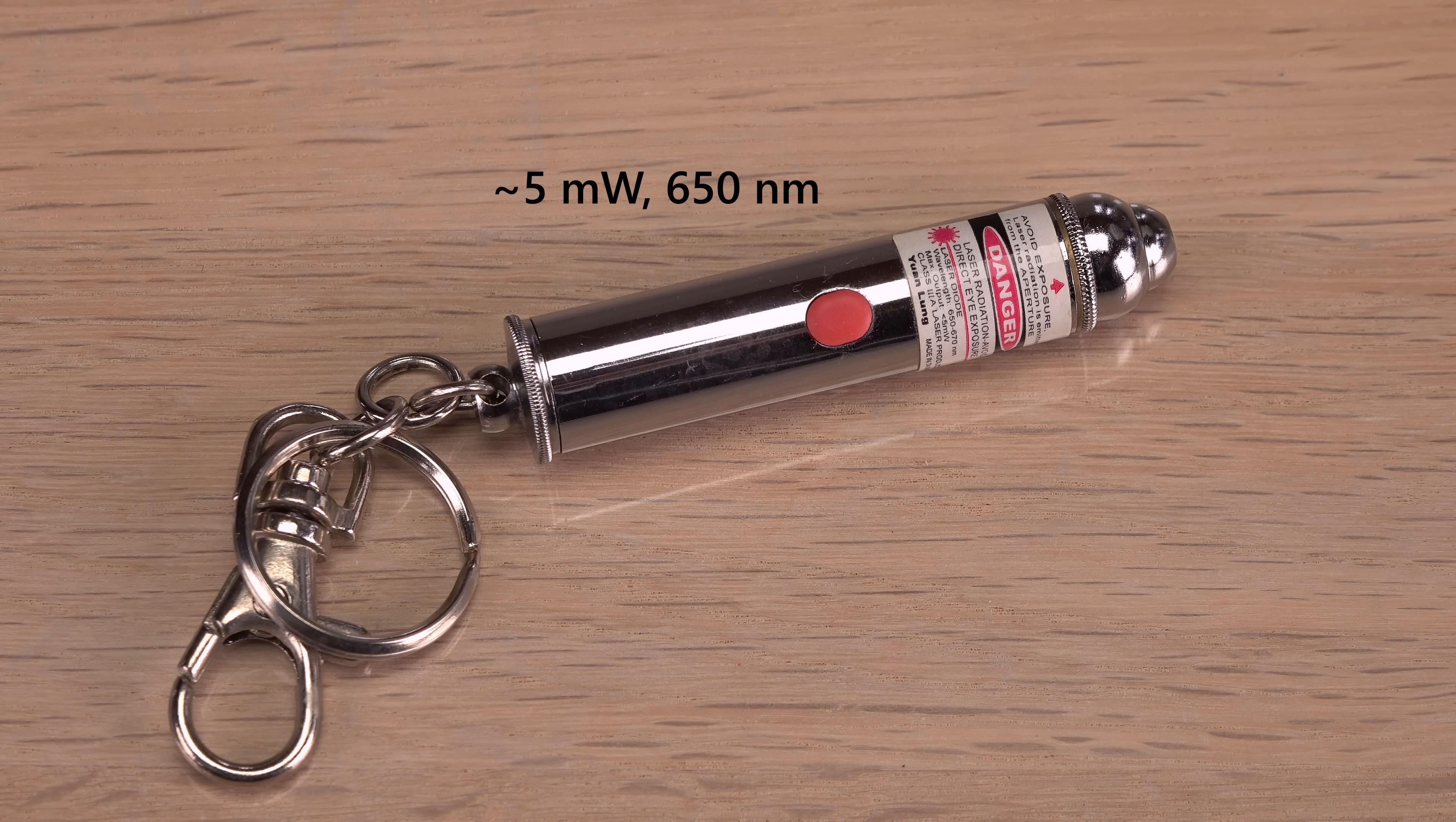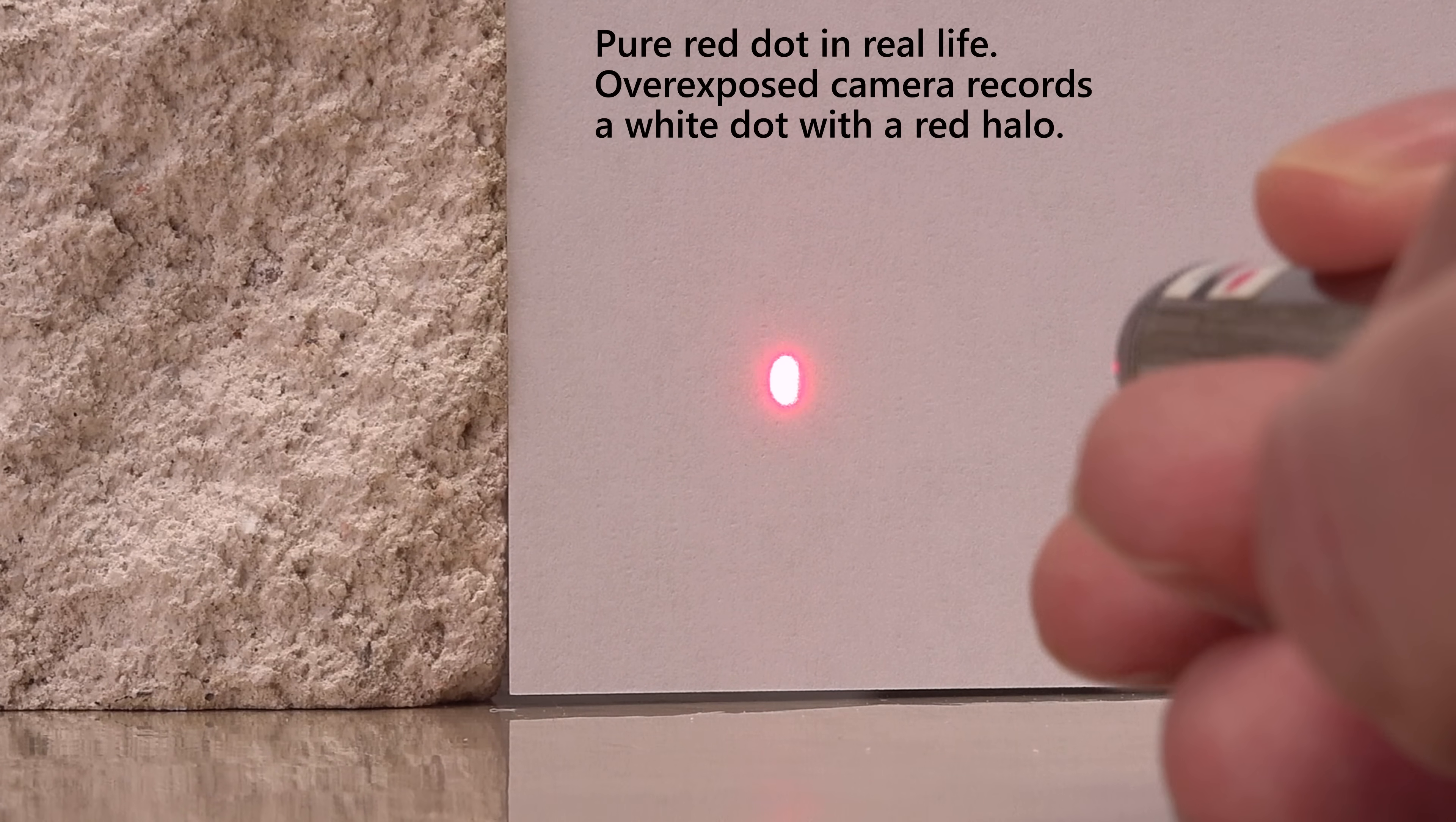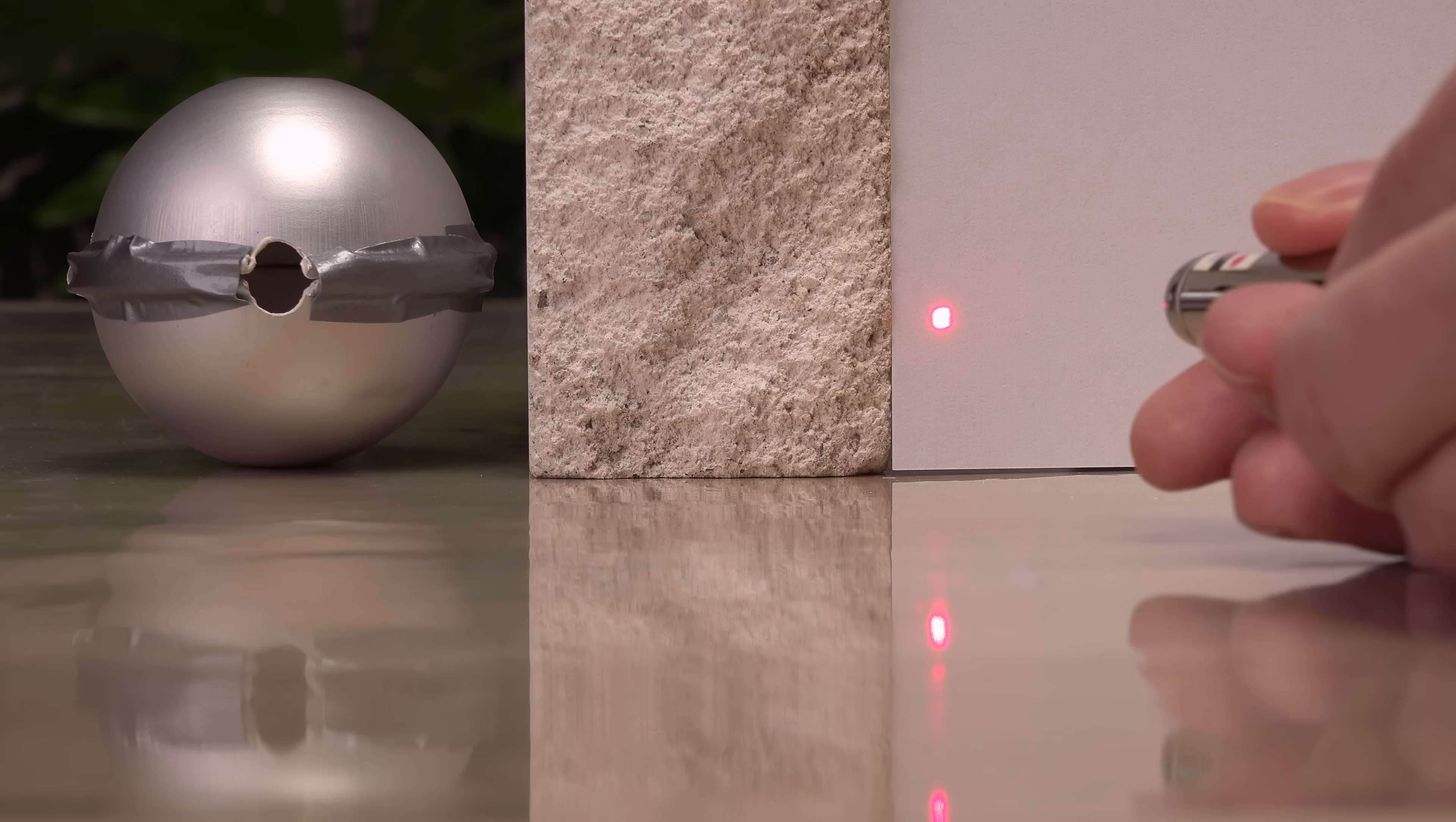First with a simple 5 mW red laser pointer. Even this feeble laser overexposes the camera to a white dot, meaning it will also be challengingly bright for the spectrometer. Even in the reflected mirror image. Same issue on the brick.